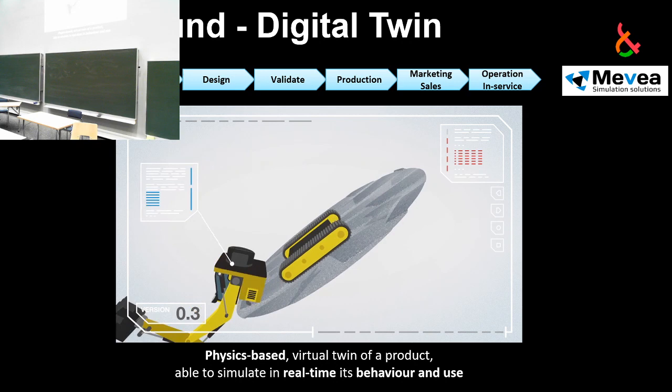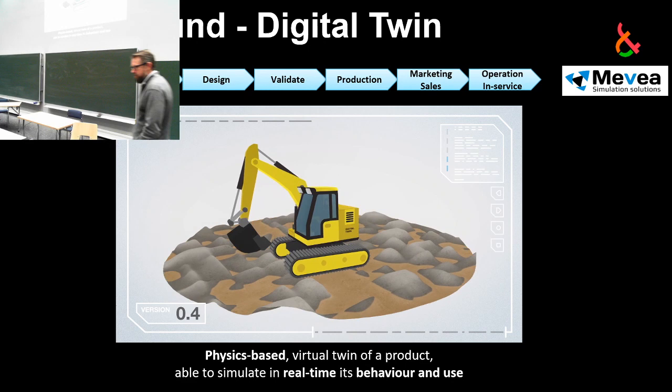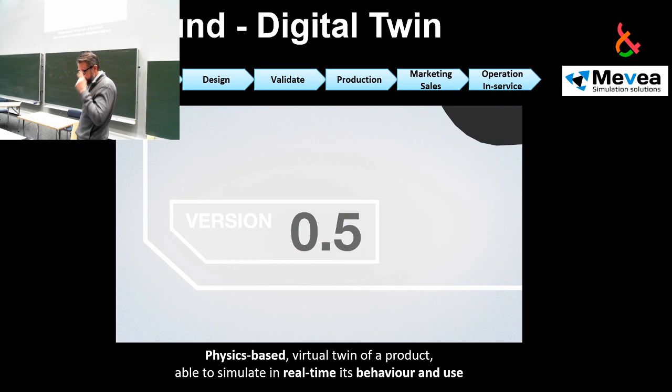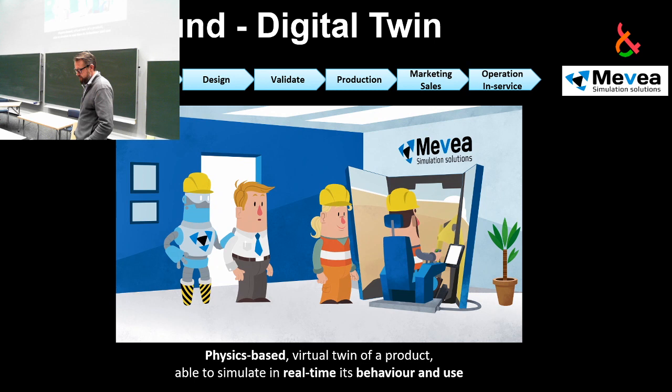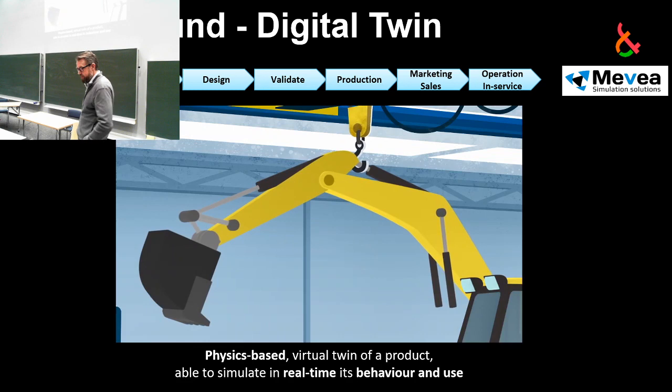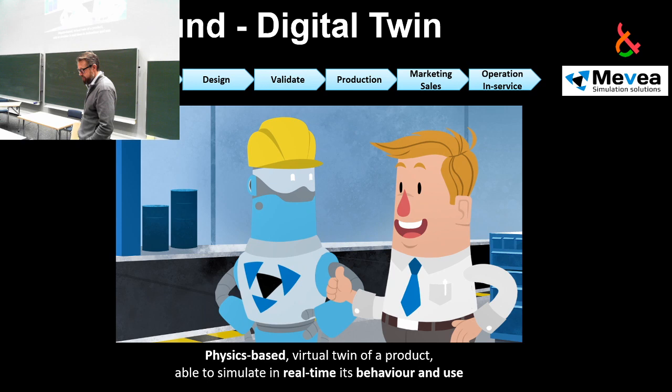The Movea software simulates real-life physics so the machine can be tested in different environments and on the actual tasks it's designed for. You can detect potential problems before anything is even built. The digital twin can be inspected and modified when necessary, and stakeholders can get involved in development at an earlier stage, resulting in fewer prototypes, reduced costs, and faster lead times.